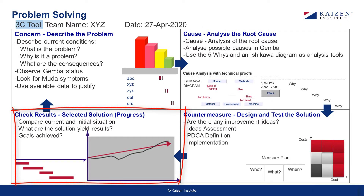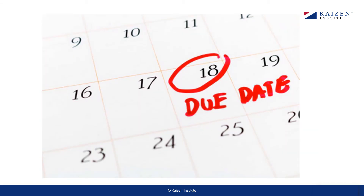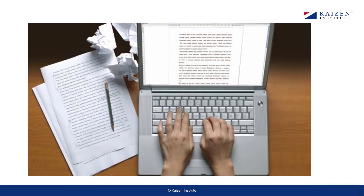The check results column comprises comparing the current and initial conditions and documenting the improvement. The check results section also covers solution yield results and the goals achieved. Once the countermeasure has been selected and implemented, you have to keep checking the results. The checking of results can be done by the whole team or an individual. A person from a team can be selected as the problem owner who keeps track of the results. Select a realistic due date to close the documented problem.